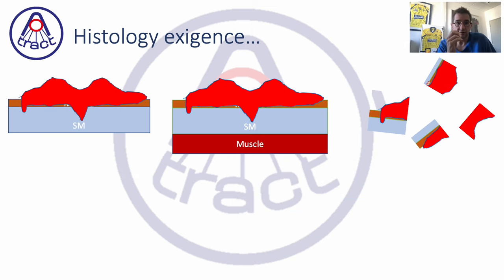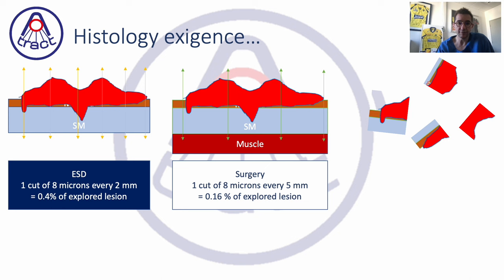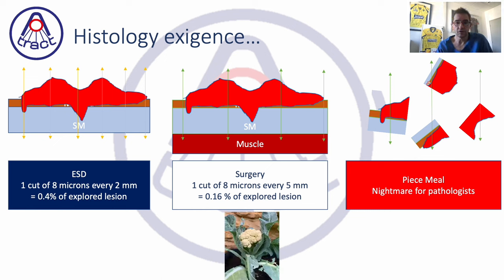If you are the expert of the region, you should be able to treat by ESD most lesions using an R0 resection. Every cancer should be removed at least en bloc and if possible R0, because it's the only way to have a good histology assessment. With ESD you will have one cut of six to eight microns every two millimeters — 0.4% of the lesion explored in volume — versus one cut every five millimeters with surgery, so only 0.2% of the lesion explored. With piecemeal it is a nightmare for pathologists.